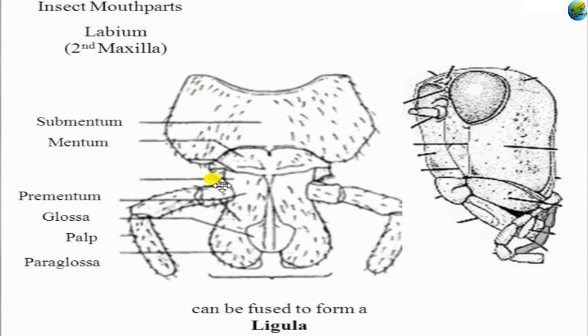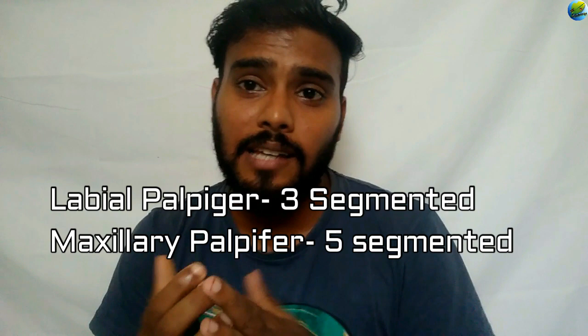In the prementum of the labium, a palp is also formed, similar to that seen in the maxilla. However, the labial palp is three-segmented and is called the palpiger, whereas the maxillary palp is five-segmented and called the palpifer. A useful mnemonic: the maxilla comes before the labium alphabetically, and F comes before G, so palpifer (maxilla) comes first and palpiger (labium) comes next.